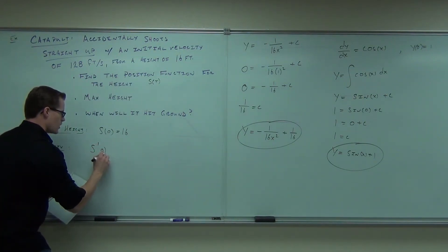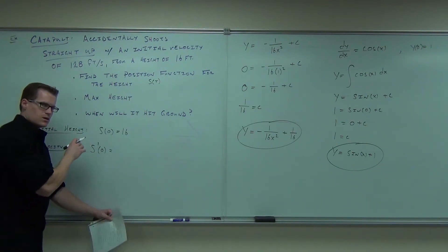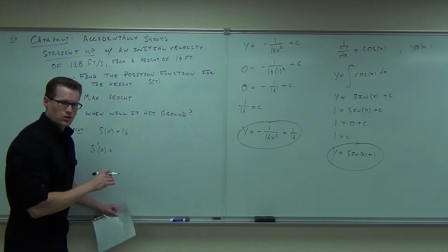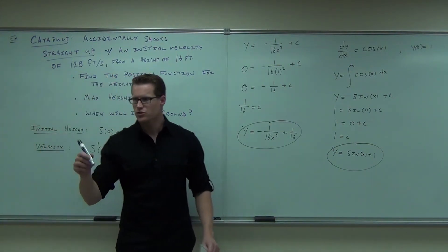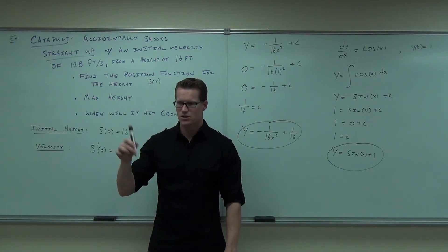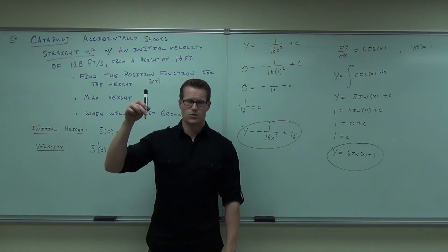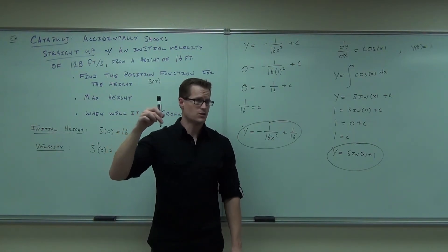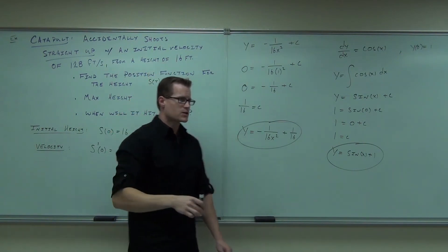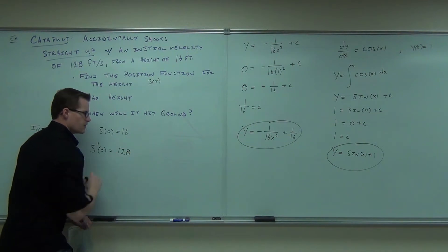And it's an initial velocity. So the initial velocity would be the first derivative at time 0. Because what's going to happen to your projectile? Is it going to stay at 128 feet per second forever? No. It's going to slow down immediately after you launch it out of the catapult, because gravity is going to affect it — we're not going to do wind resistance, but gravity is going to affect it. It's going to come up, and then it's going to come down. So the initial velocity at time 0 is 128 feet per second.